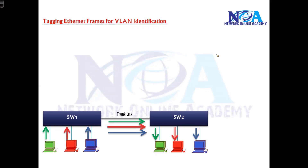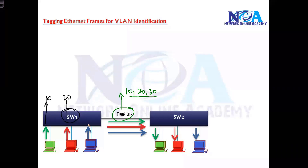The question is: a single link is carrying VLAN 10, VLAN 20, and VLAN 30 traffic. When Switch 1 is sending, it knows this belongs to VLAN 10, this to VLAN 20, this to VLAN 30 — or for easy understanding, you can use colors: red, green, blue. When it is received on Switch 2 on the same link, how will Switch 2 identify which frame belongs to VLAN 10, which to VLAN 20, and which to VLAN 30?